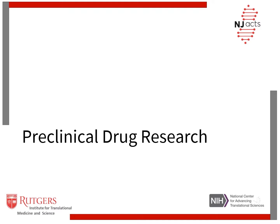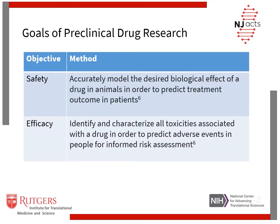Now we will discuss the objectives and processes that comprise preclinical drug research. The primary objective of preclinical drug research is to determine potential safety and efficacy of the drug in non-human subjects. Safety is determined by accurately modeling the desired biologic effect of the drug in animals in order to predict the treatment outcome in patients. Efficacy is determined by identifying and characterizing toxicities associated with the drug, designed to predict adverse events in people for an informed risk assessment.